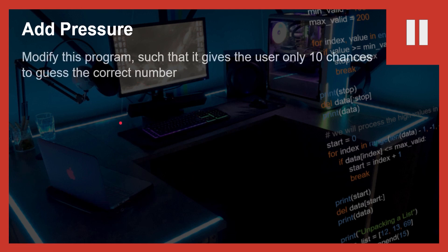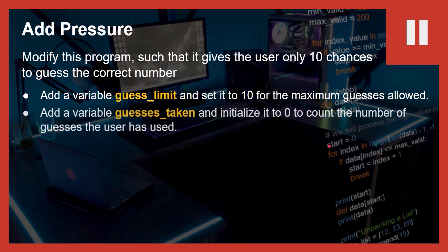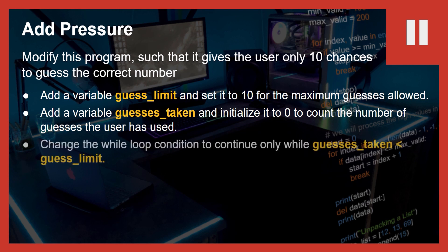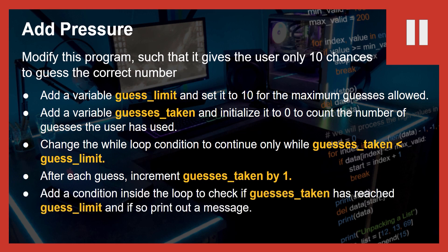Time to add some pressure. Modify this program such that it gives the user only 10 chances to guess the correct number. First, add a variable called guess_limit and set it to 10 for the maximum guesses allowed — you can set it to whatever you want, even random. Next, add a variable guesses_taken and initialize it to zero to count how many guesses the user has used. Change the while loop condition to continue only while guesses_taken is less than guess_limit. After each guess, increment guesses_taken by one. Add a condition to check if guesses_taken has reached the guess limit and print a message telling the user they're done.